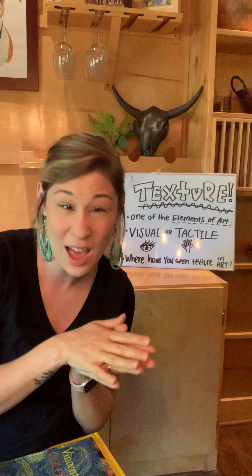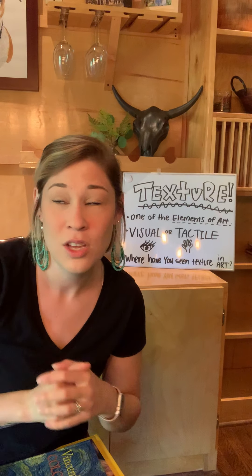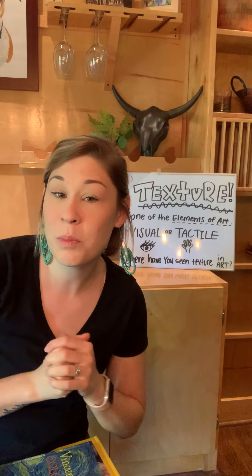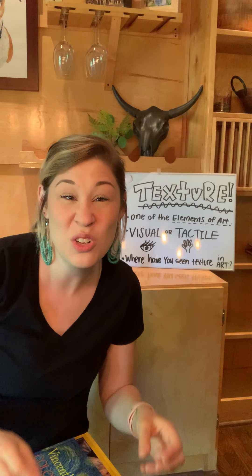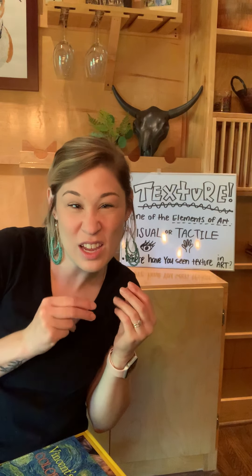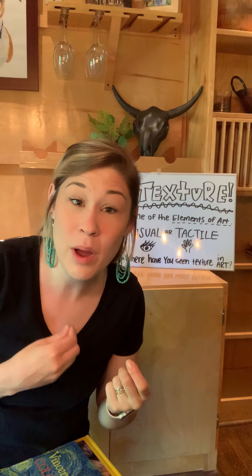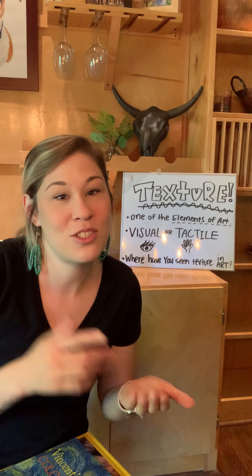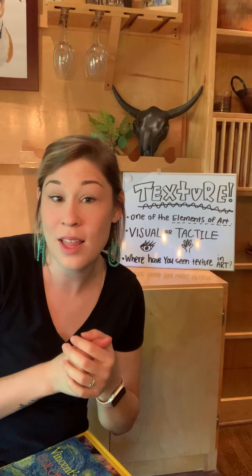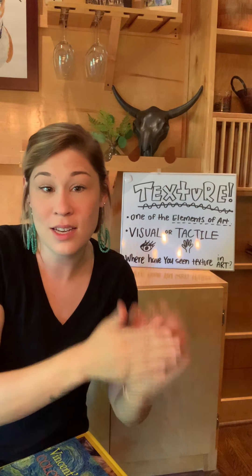Visual texture is texture that looks like it feels a certain way, but it doesn't actually feel that way. A lot of artists use this when they are drawing and painting and making two-dimensional flat art that doesn't actually have real texture but they want it to look like it does. So let's say you were painting a picture of an elephant — you know elephants are my favorite animals — and you wanted the elephant skin to look wrinkly, thick, dry, and rough. You would paint it to look that way, but if you felt that painting, would it actually feel like an elephant? No — that's just visual texture.